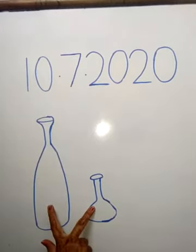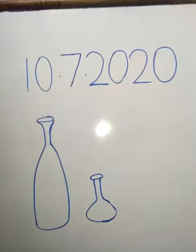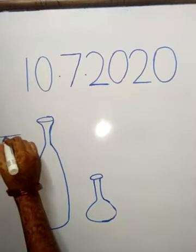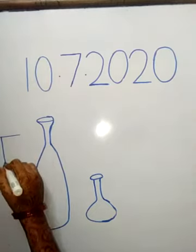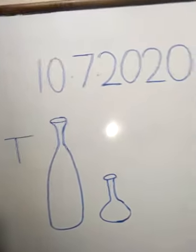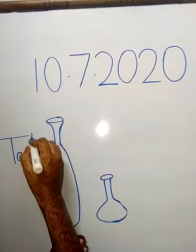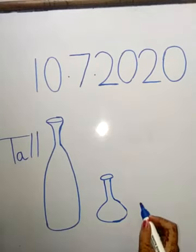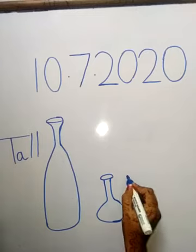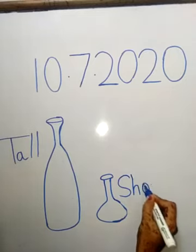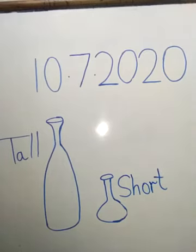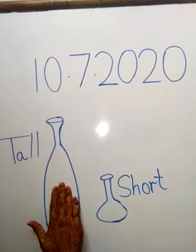Children, here are two vases. One is big, one is small. What do we call the big one? Very good — the big one we call tall. This one is tall, and another one is short. Tall. Short.